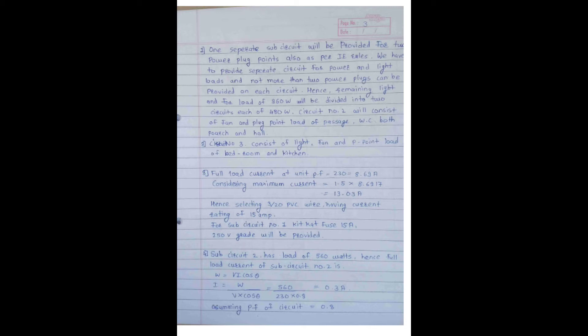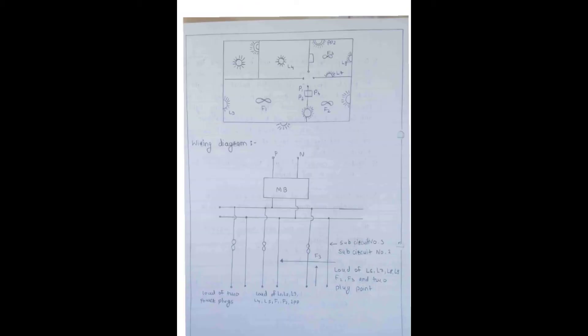Full load current at unity power factor equals 2,960 divided by 230 equals 8.69 ampere. Considering maximum current equals 1.5 times 8.69, it equals 13.03 ampere. Selecting 3 by 2.0 PVC wire having current rating of 15 ampere. For sub-circuit, the number of one key cat fuse 50 ampere, 250 volt grid will be provided.